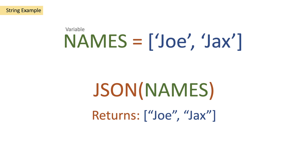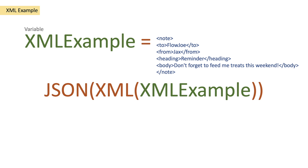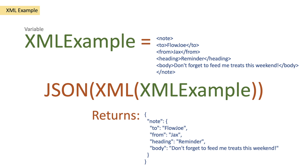Now let's look at another example — an XML example. Here we're starting with a variable called XML example, and we've got some XML. This is actually a string variable, so we're writing our XML in a string variable. Then we're going to pass that XML into an XML function, which is going to convert our string to XML, and then from there convert that to JSON because it's within the JSON function. We'll get a return that looks like a JSON object with note, and inside we have Flow Joe, from Jax, heading: reminder, body: don't forget to feed me treats this weekend.